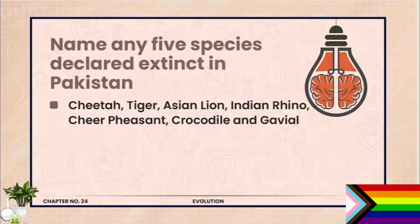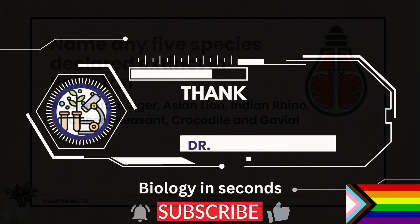Question number 10: Name any five species declared extinct in Pakistan. Pakistan mein aysi 5 species ka naam batao jo extinct declared ho chuki hain. The list includes: cheetah, tiger, Asian lion, Indian rhino, cheer pheasant, crocodile, and gavial.